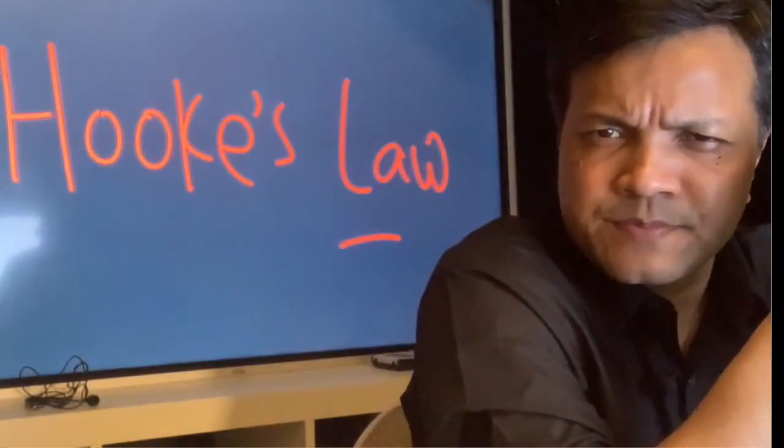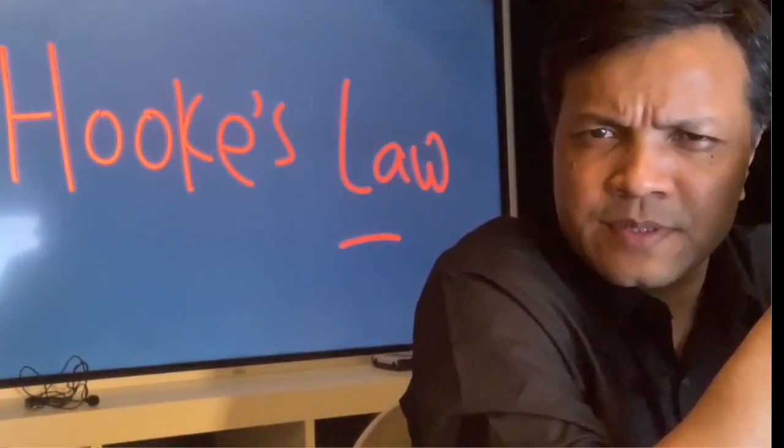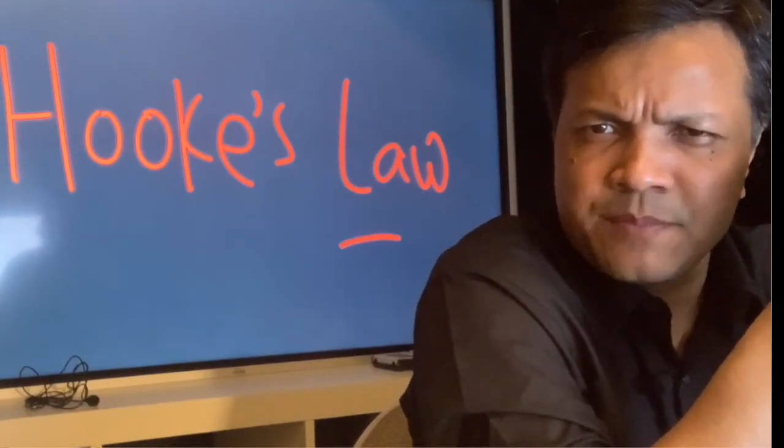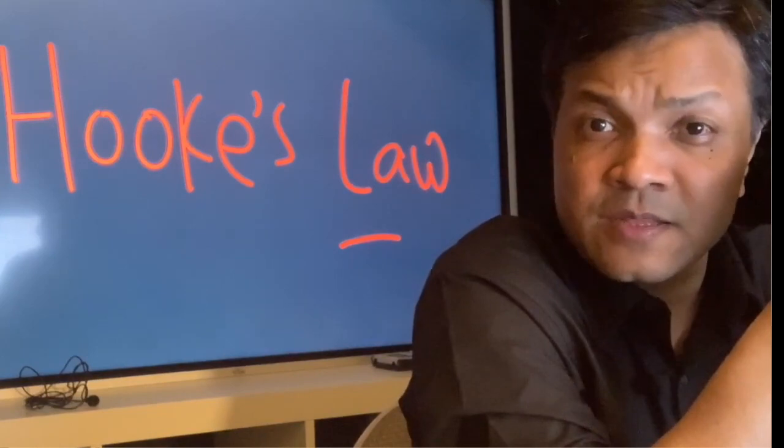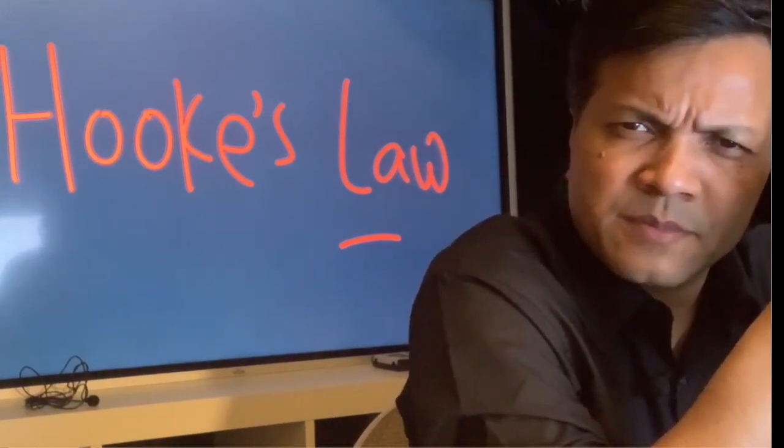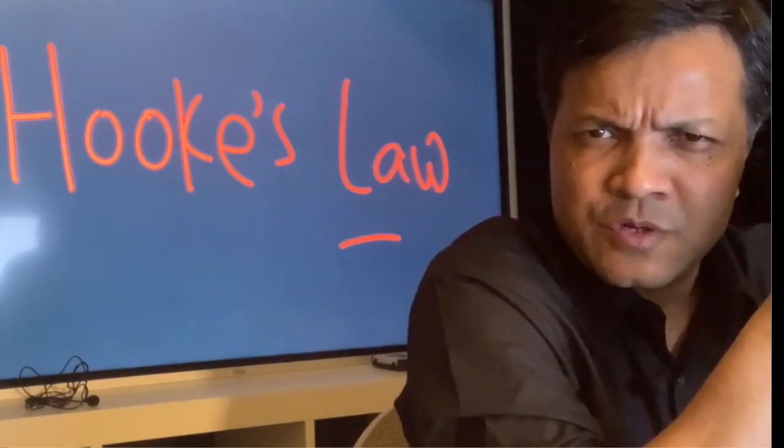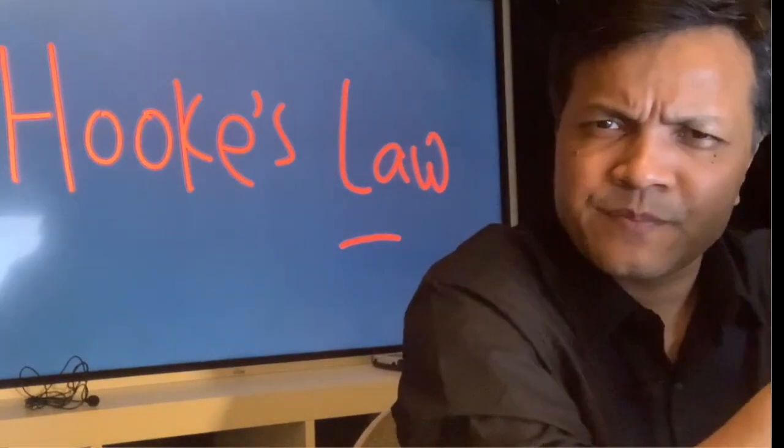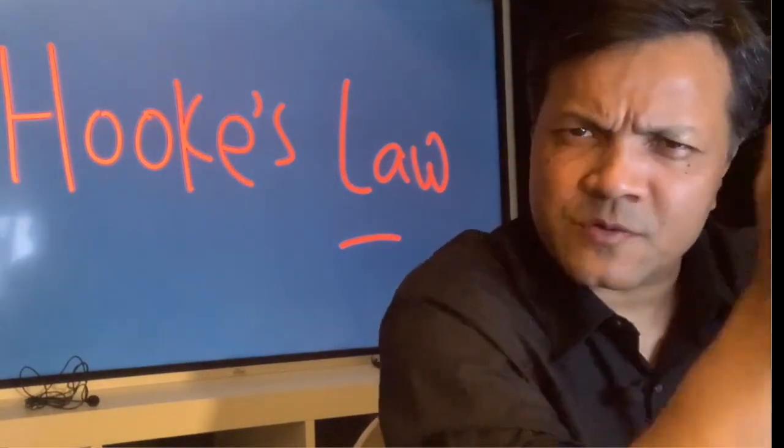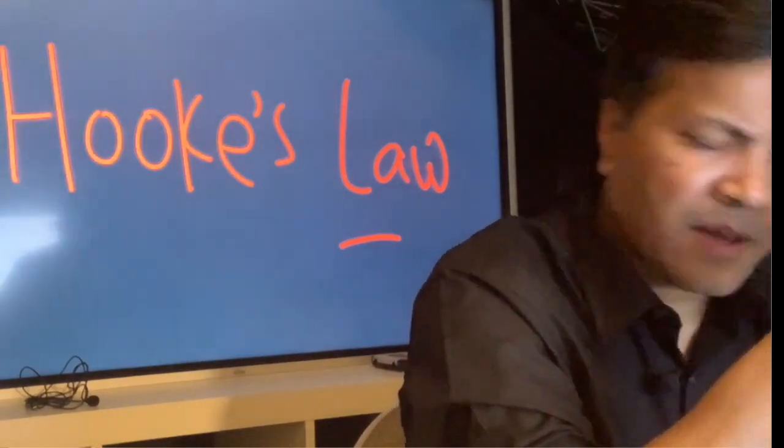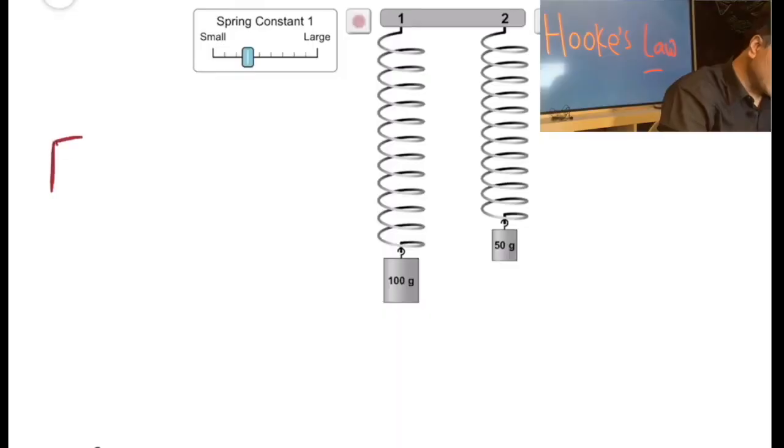It was 1660. Robert Hooke, a contemporary of Sir Isaac Newton, was sitting in his lab. All of a sudden he noticed a spring. He wanted to understand the behavior of the spring, so he stretched it, compressed it, let it go, and realized that force has something to do with the stretch. He hypothesized F is proportional to X.